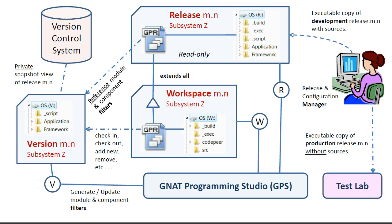The release project is configured to enable a selection of modules and components via a drop-down menu. The source filters associated with the modules and components in the release are artifacts of the development environment, which are maintained by the version control system on drive V. At the end of a development cycle, each developer commits code in his or her workspace to version control. The release configuration manager then integrates all changes into a consistent build and generates the module and component filters from the updated codebase by running a script that invokes various GANAT tools.